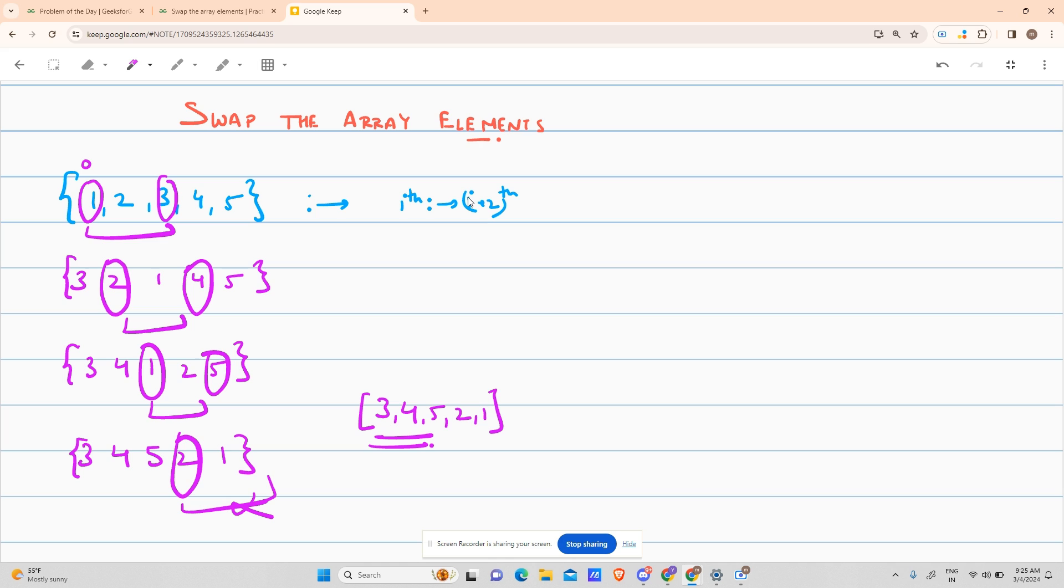Our approach will be very simple. We will be starting from i=0, will go up till i+2 is less than n, because i+2 should be in bounds. And what were we doing? We will be swapping arr[i] and arr[i+2].